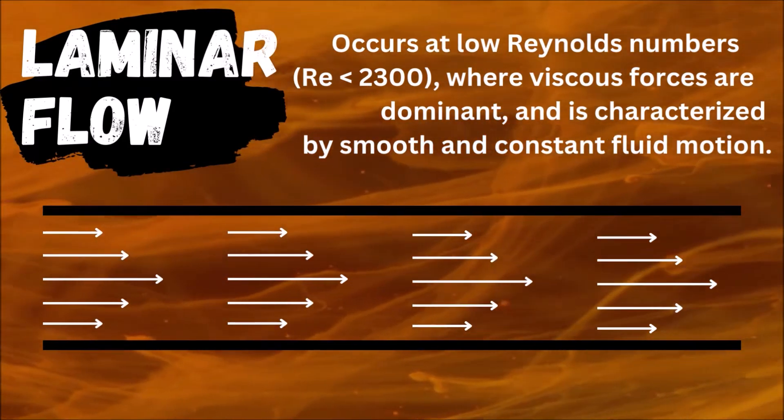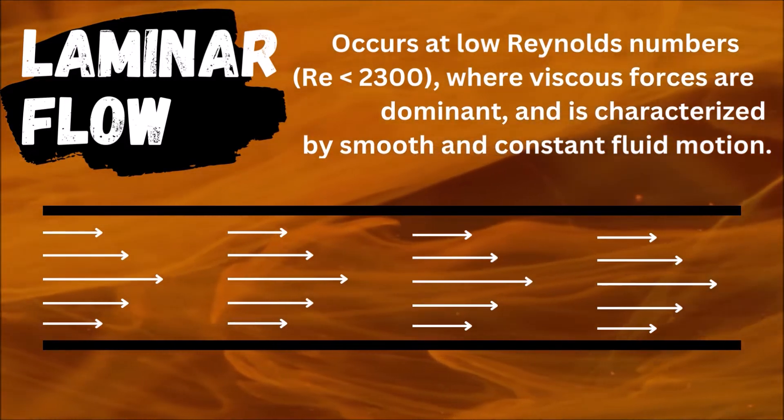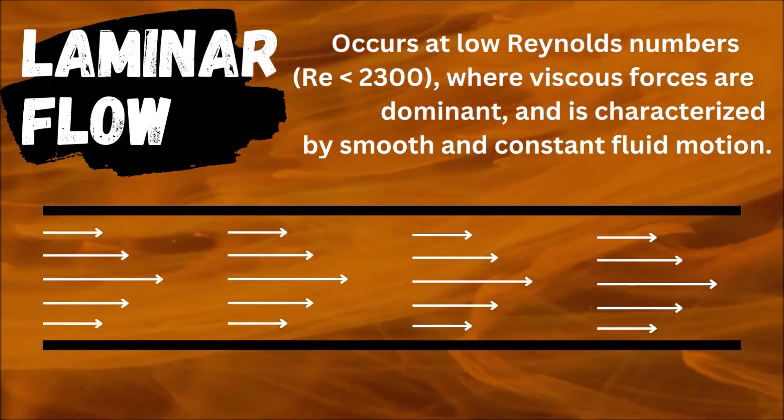This is laminar flow. It occurs at low Reynolds number with less than 2300, where viscous forces are dominant, and is characterized by smooth and constant fluid motion.